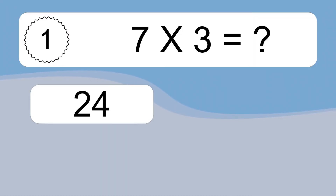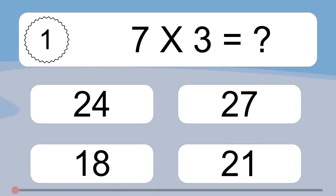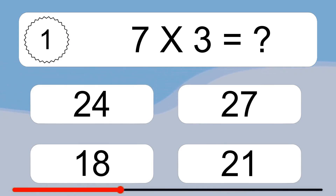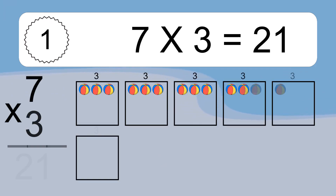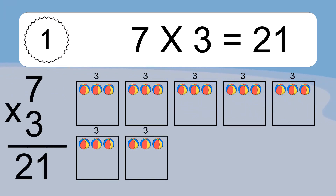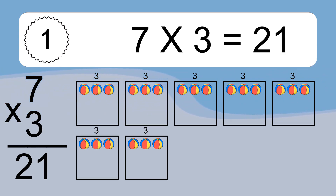Seven times three equals what? Seven times three equals 21. We have seven boxes and each box has three colorful balls inside. If you count all the balls in all the boxes together, you will have seven times three balls. This equals 21 balls.